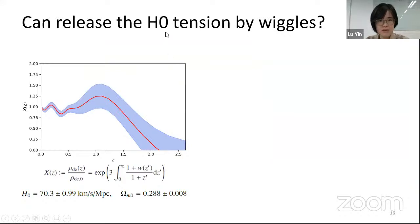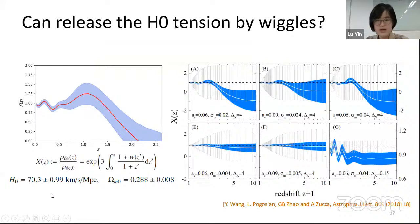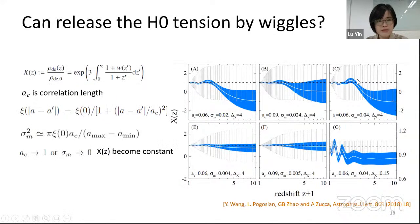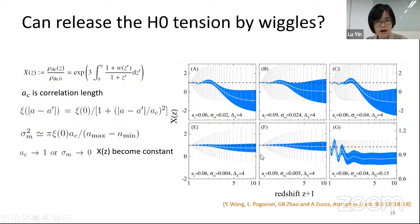We do simulations based on the Wiggles model, and this is a constraint result for H_0. H_0 equals 70.3 with a very small error bar — a very good result for the H_0 tension. This result is also consistent with the work by Yuting Wang and Gongbo. This kind of Wiggles model also depends on some calculation parameters: if we consider parameter A_C equal to one or sigma_M equal to zero, X_C will also become constant.